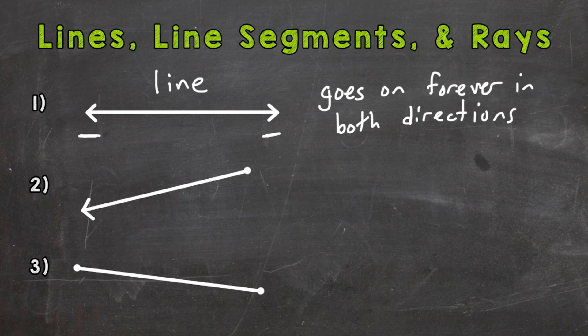Now number two, we have a ray. Like we just talked about, this arrow here signifies that part of the ray goes on forever.